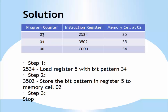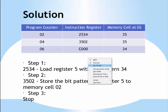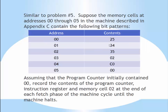Remember the program counter always moves ahead one step of the instruction register. The instruction register gets loaded with the first instruction; the program counter holds the address of the next instruction, ready to fetch it. At the end of the first fetch cycle, 2534 has been fetched by the instruction register because that is the first instruction found in address cells 00 and 01. The program counter has moved on to the next address which is 02, and the instruction register has 2534.